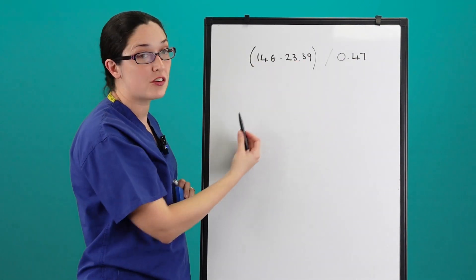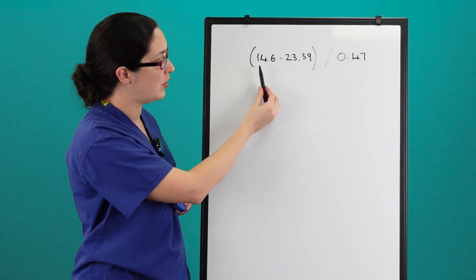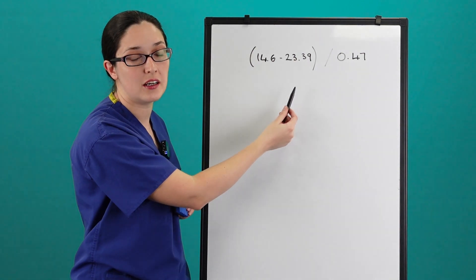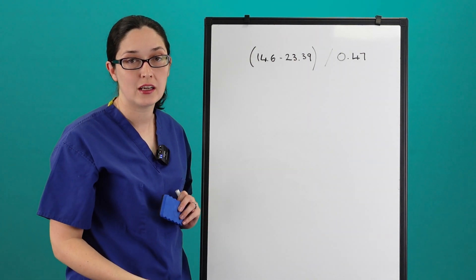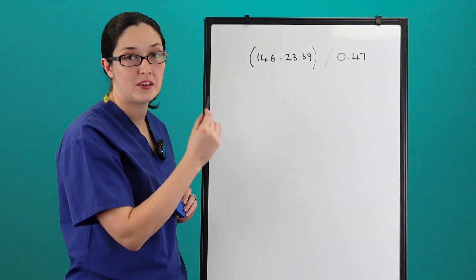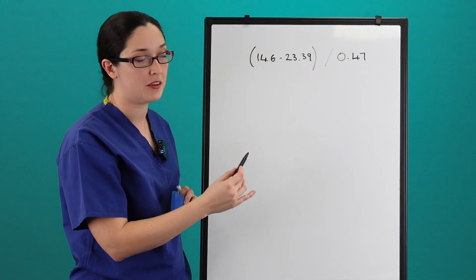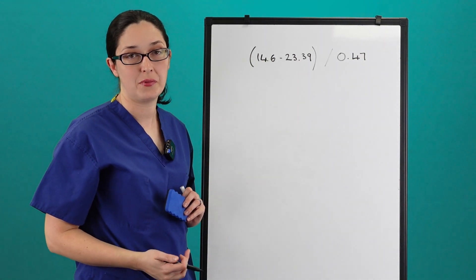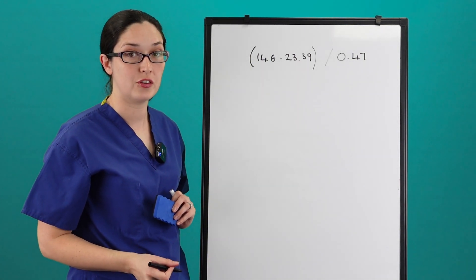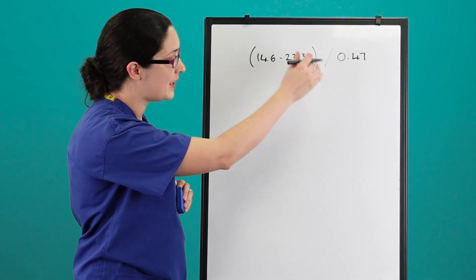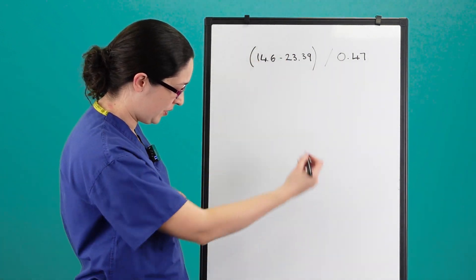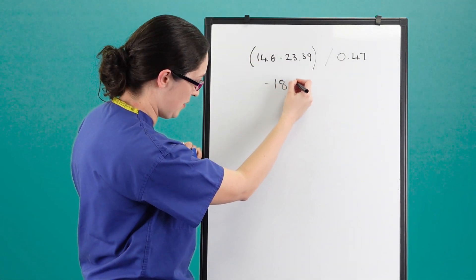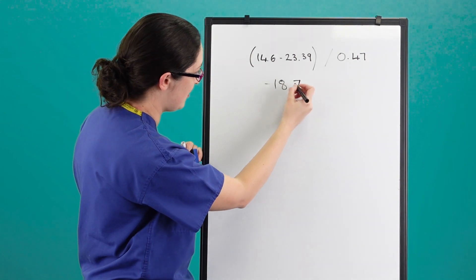Remember to do brackets first: calculate 14.6 minus 23.39. If you're using a calculator, be sure to press the equals button first before dividing by 0.47.